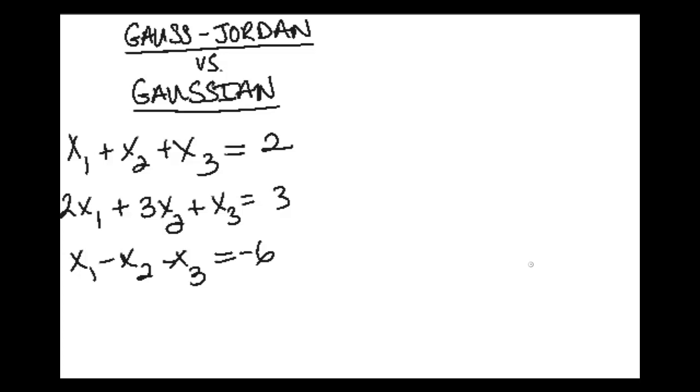The main difference is once you set up your augmented matrix, in this case our augmented matrix would be 1, 1, 1, 2, and 2, 3, 1, 3, and then 1, negative 1, negative 1, negative 6. Once you have this augmented matrix, the main difference is where you go from here.